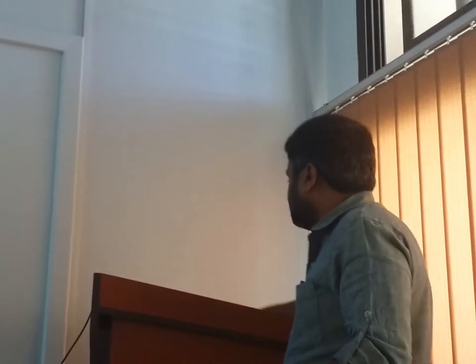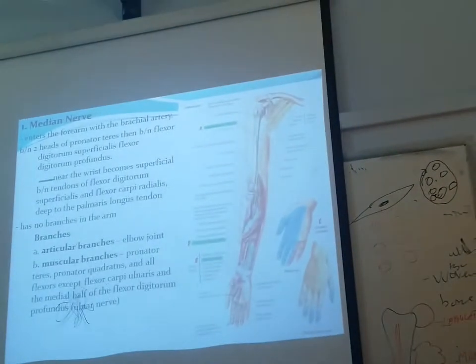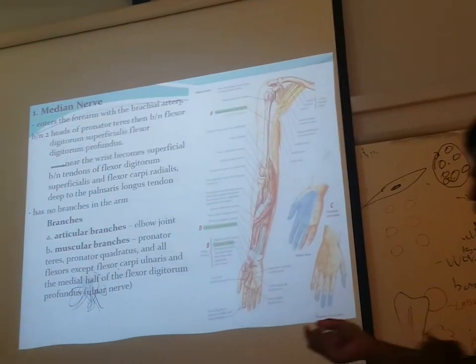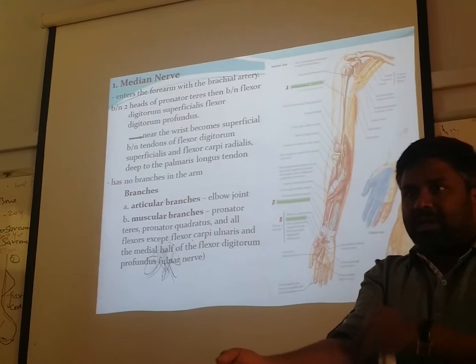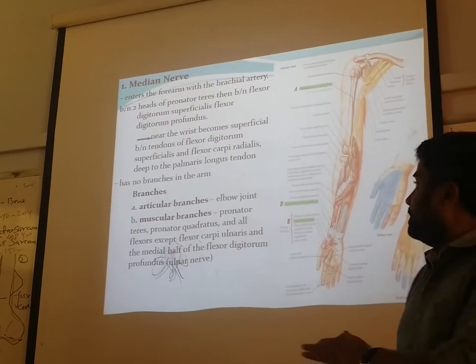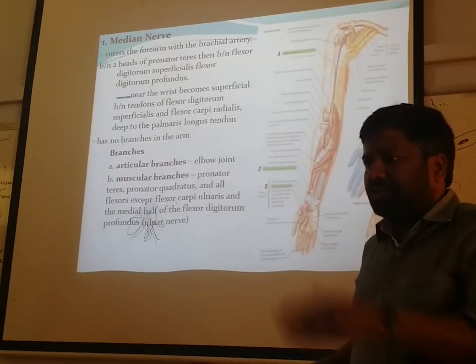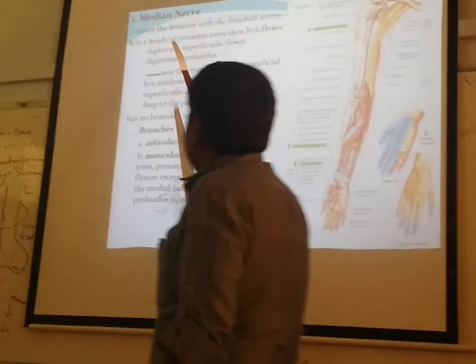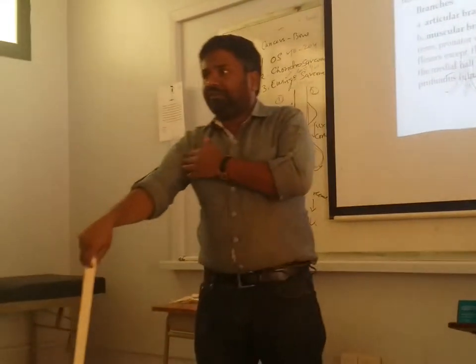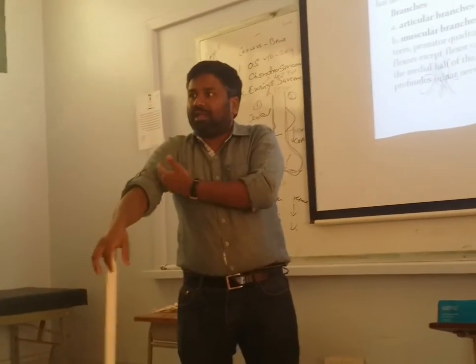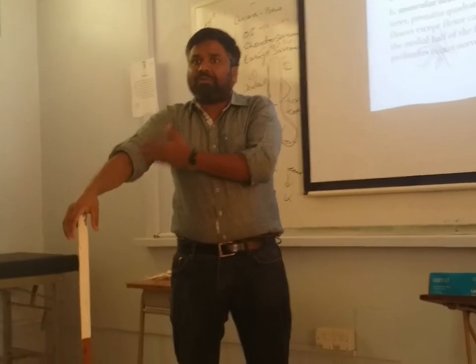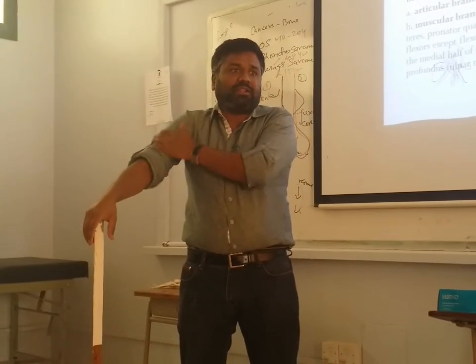The artery of the posterior compartment is the posterior interosseous artery and branches from the radial and ulnar arteries. Now coming to the study of individual nerves in the forearm — the course of the median nerve, ulnar nerve and radial nerve. The median nerve takes origin from medial and lateral roots from the medial and lateral cords of the brachial plexus.